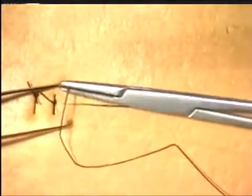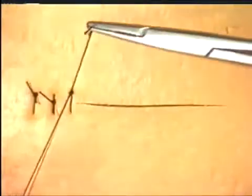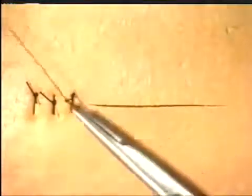When the incision edges are as closely aligned as these, it is appropriate to go through both edges with one smooth movement. But as will be demonstrated later, this is not always possible, and often the edges need to be taken separately.